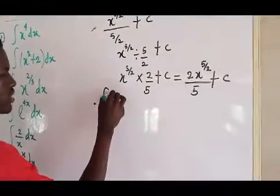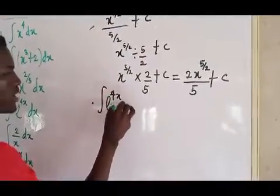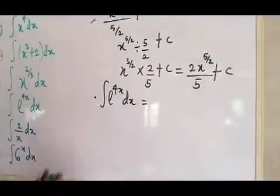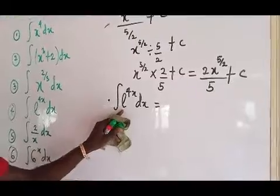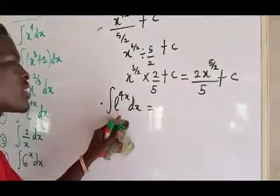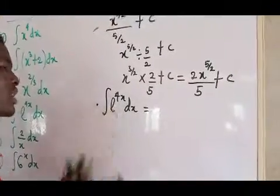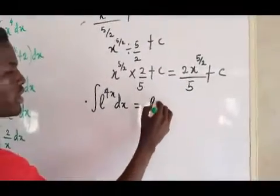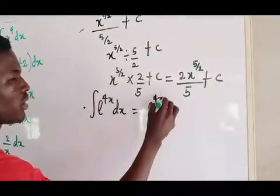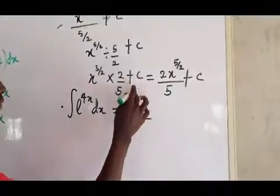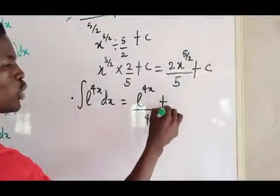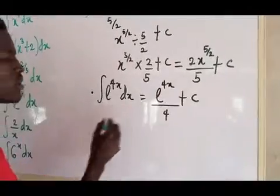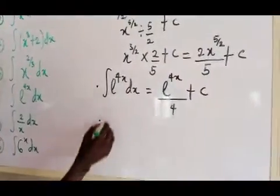The fourth example: integral of e to the power 4x dx. As discussed in the last video, when you have an exponential with a constant k, the result is simply e to the power 4x over 4, plus c — you bring the constant down to divide.